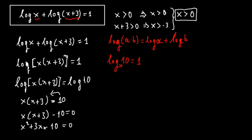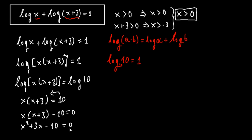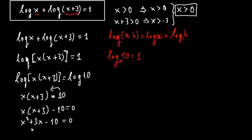We can easily see that the two solutions are 2 and minus 5. We could use the discriminant but it's too obvious, so we factor as (x minus 2)(x plus 5) equals 0.